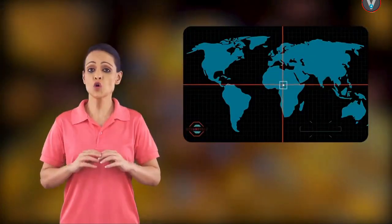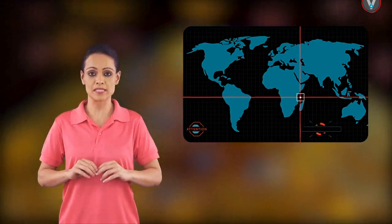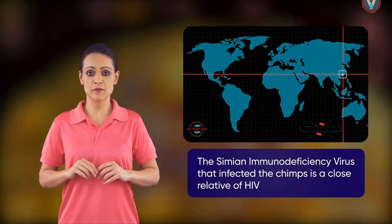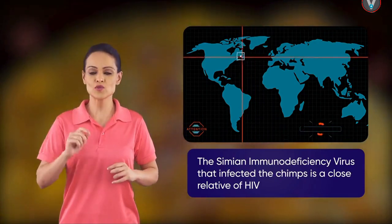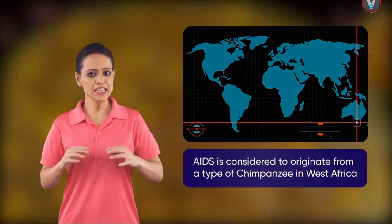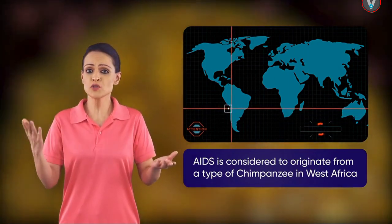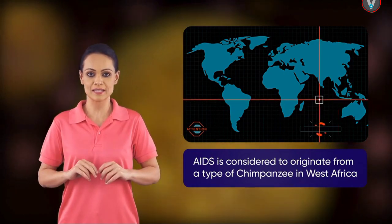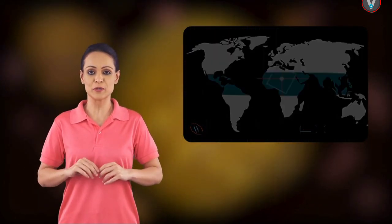HIV was not always the human immunodeficiency virus. The simian immunodeficiency virus that infected the chimps is a close relative of HIV. Around the 1920s, the virus crossed from chimps to humans, and that is how the spread began in humans. Let's learn more about AIDS in this video.